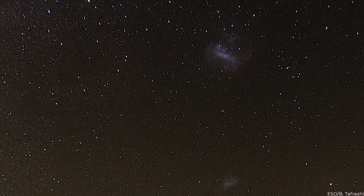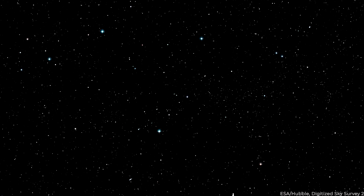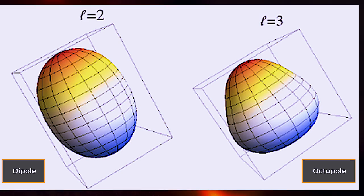It begins with a monopole, representing the average temperature across the entire sky. The dipole, quadrupole, octupole, and so on are next introduced, with each scale representing smaller regions of the sky. These distinct scales should ideally have random orientations in an isotropic cosmos. The dipole may have a hotspot in one direction, while the octupole may have a hotspot in another, with no link between them.